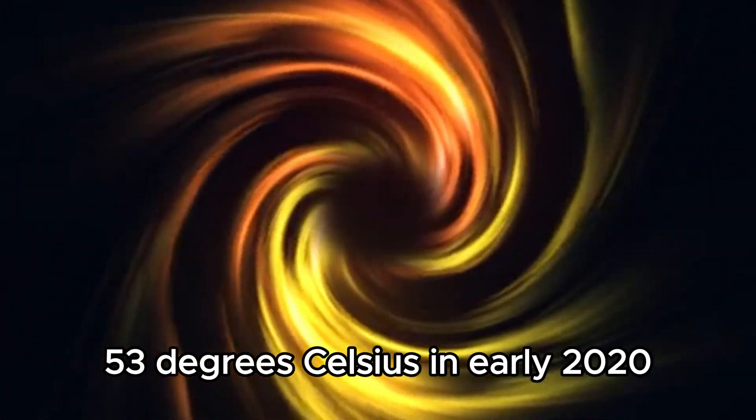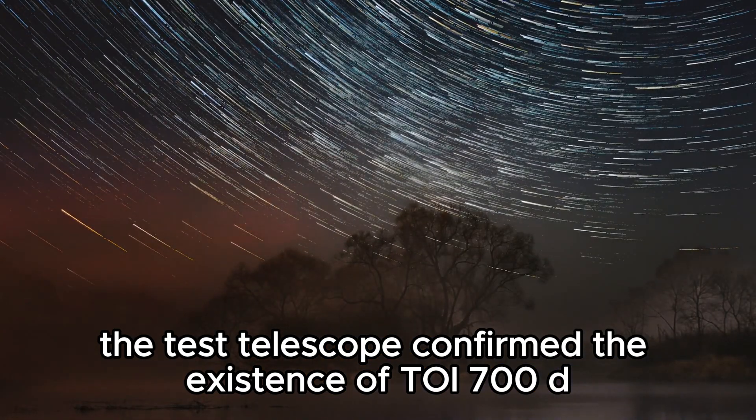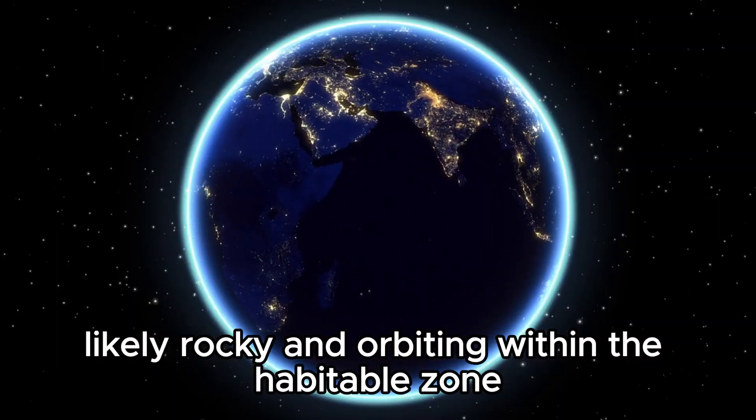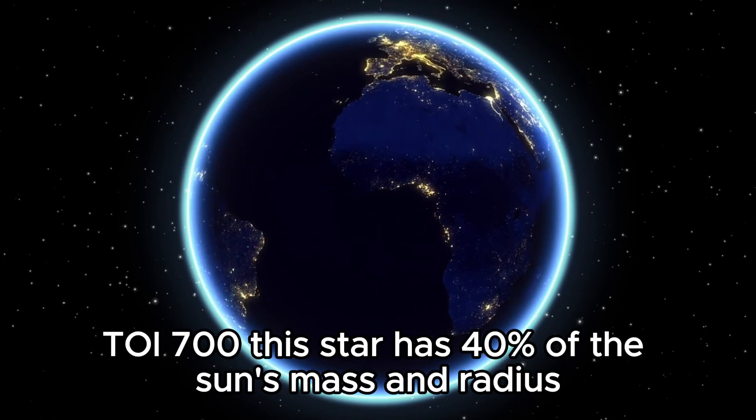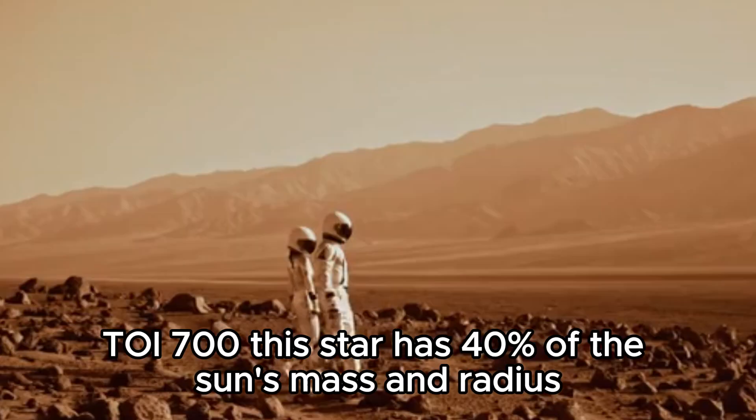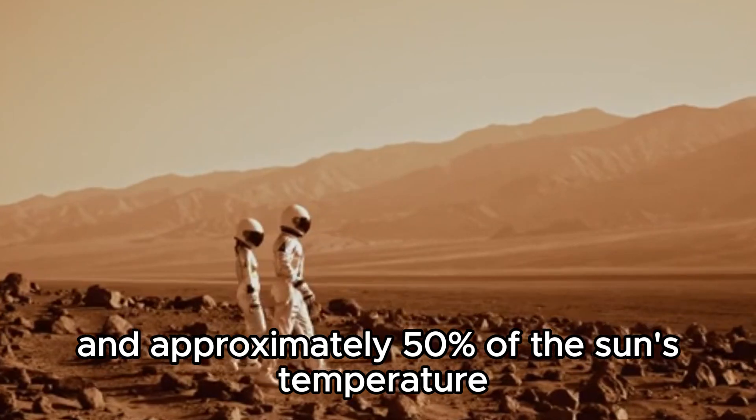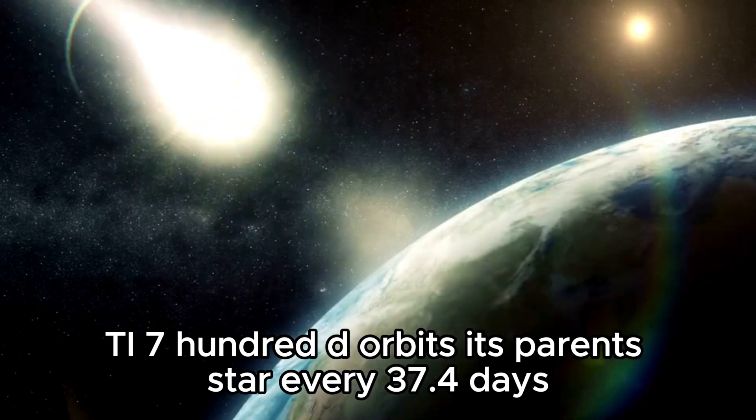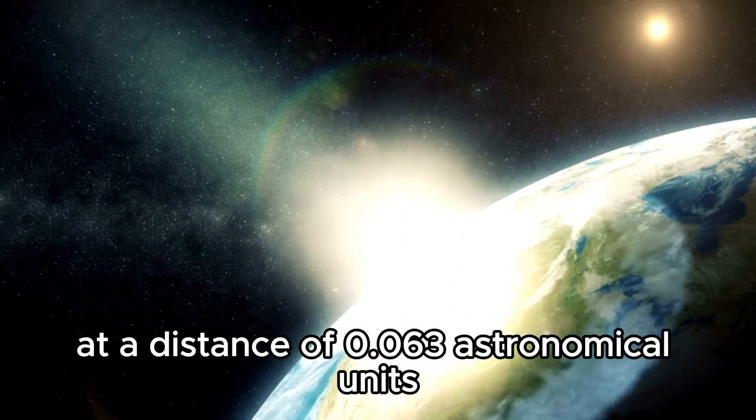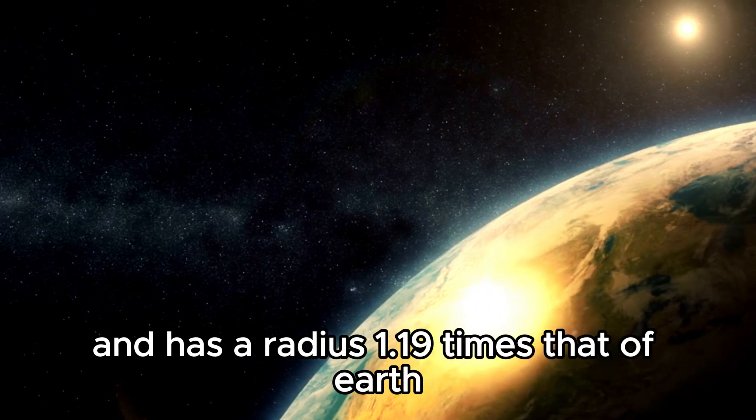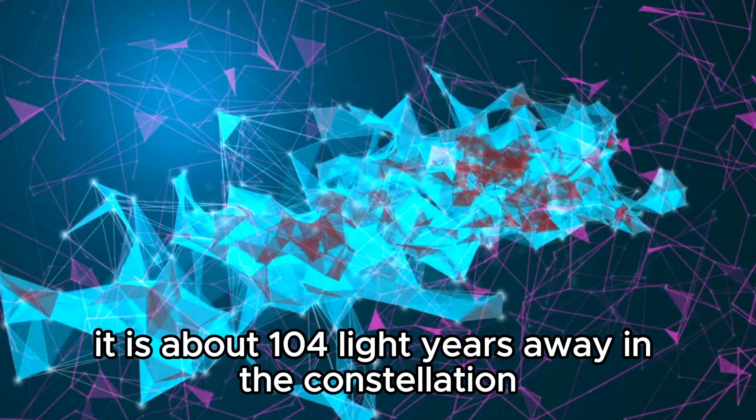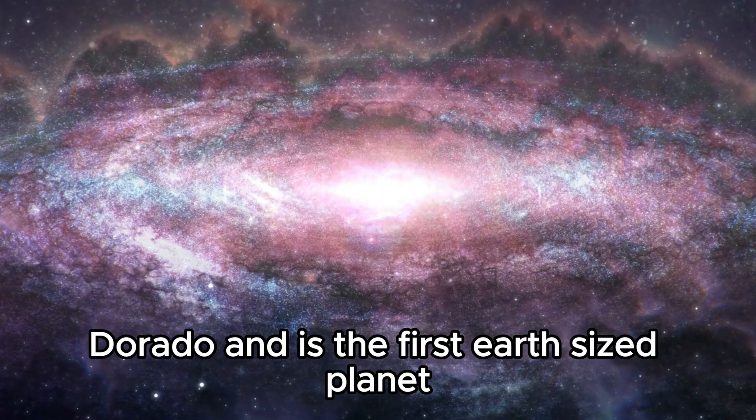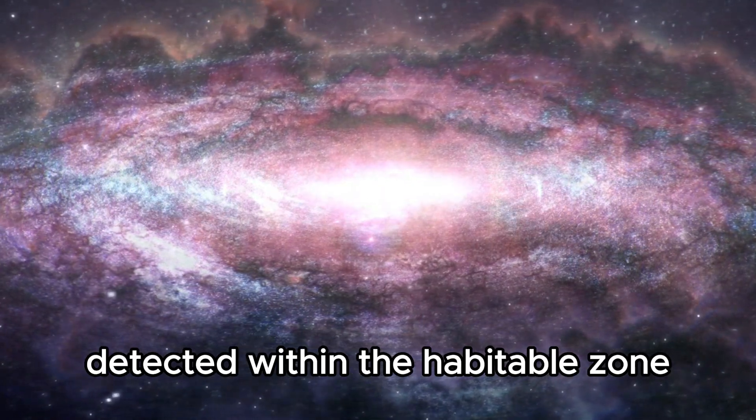In early 2020, the TESS telescope confirmed the existence of TOI700d, a near-Earth-sized exoplanet likely rocky and orbiting within the habitable zone of the red dwarf star TOI700. This star has 40% of the Sun's mass and radius and approximately 50% of the Sun's temperature. TOI700d orbits its parent star every 37.4 days at a distance of 0.063 astronomical units and has a radius 1.19 times that of Earth. It is about 104 light-years away in the constellation Dorado and is the first Earth-sized planet detected within the habitable zone by TESS.